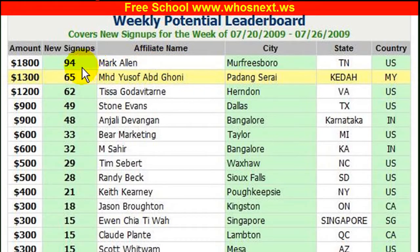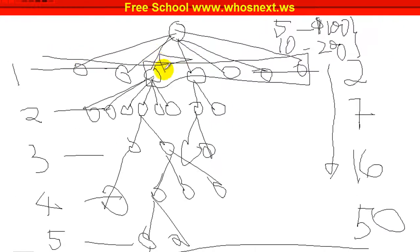Mark Allen managed to sponsor 94 persons in a week, so he got an extra income for weekly bonus of $1,800. Muhammad Yusuf Ghani from Malaysia managed to sponsor 65, so he's gonna earn $1,300 that following week. Can you imagine for Mark Allen, one single week he managed to get 94 at the first level. Can you imagine what's gonna happen if his network grows until the fifth level? It's a very huge income.